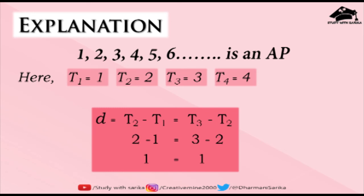Why is it an arithmetic progression? Remember the definition: arithmetic progression is a sequence of numbers where the next term depends on its previous term. The special thing about AP is that the difference of every two consecutive numbers is constant and remains the same throughout the series. So, I will find a constant if I subtract two consecutive numbers. To prove this, I have taken 4 terms of the sequence.